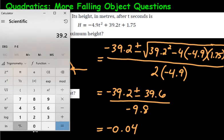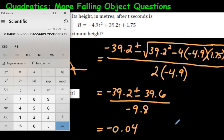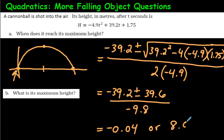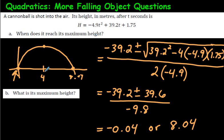For the other answer, using minus: negative 39.2 minus 39.6, hit equals, then divide by negative 9.8, and you get 8.04. So the two x-intercepts are negative 0.04 and 8.04. To find the midpoint between them, add them together: negative 0.04 plus 8.04 equals 8, then divide by 2, giving 4.